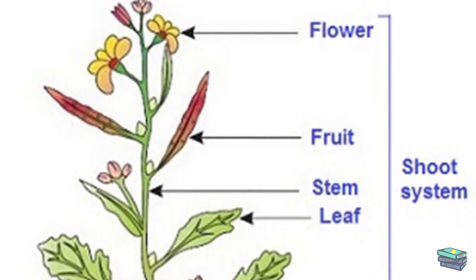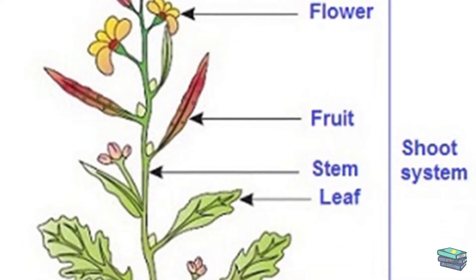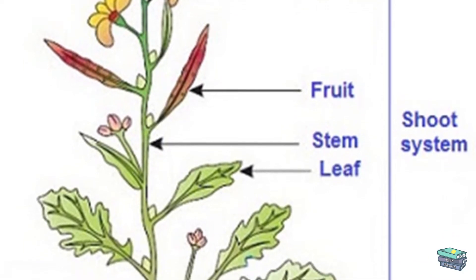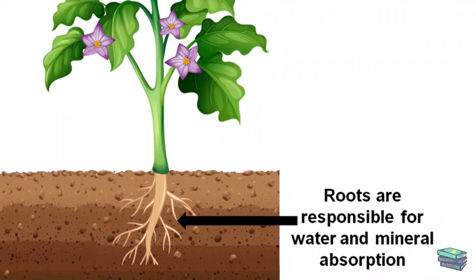...bears various branches, leaves, fruits, flowers, and so on. Second, we can see transportation. We have already learned that roots...